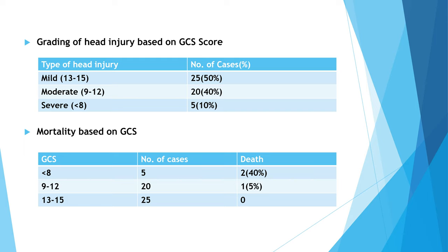Grading of head injury based on GCS score: mild with GCS score between 13 to 15, number of cases were 25; moderate with GCS score range 9 to 12, number of cases were 20; and severe with GCS score less than 8, number of cases were 5.